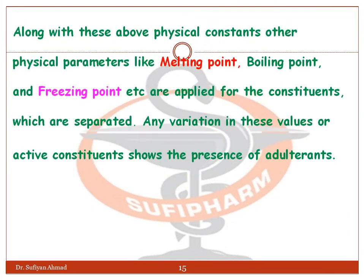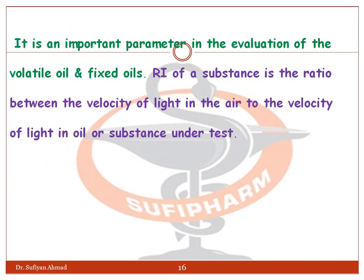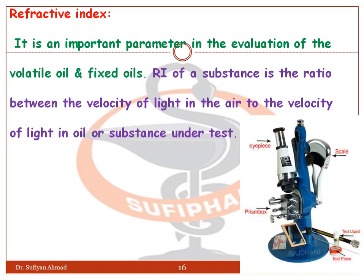Among the physical constants, other parameters like boiling point and freezing point are also applied to constituents that have been separated. Any variation in these values for active constituents indicates the presence of adulterants. The next parameter is refractive index, which is the most important parameter in the evaluation of volatile oils and fixed oils. Refractive index is the ratio between the velocity of light in air to the velocity of light in the oil or substance under test.